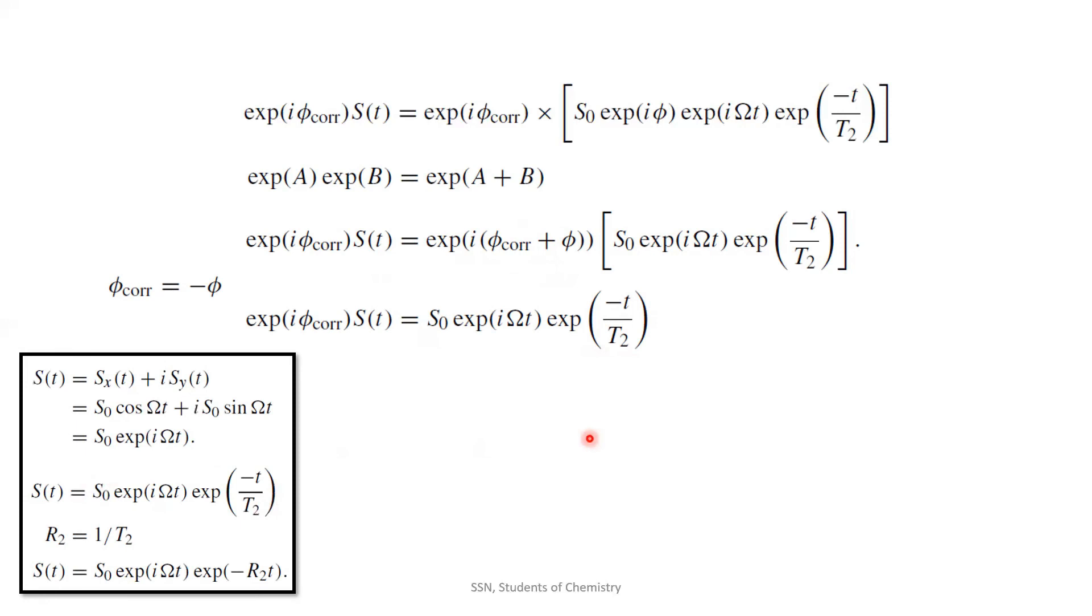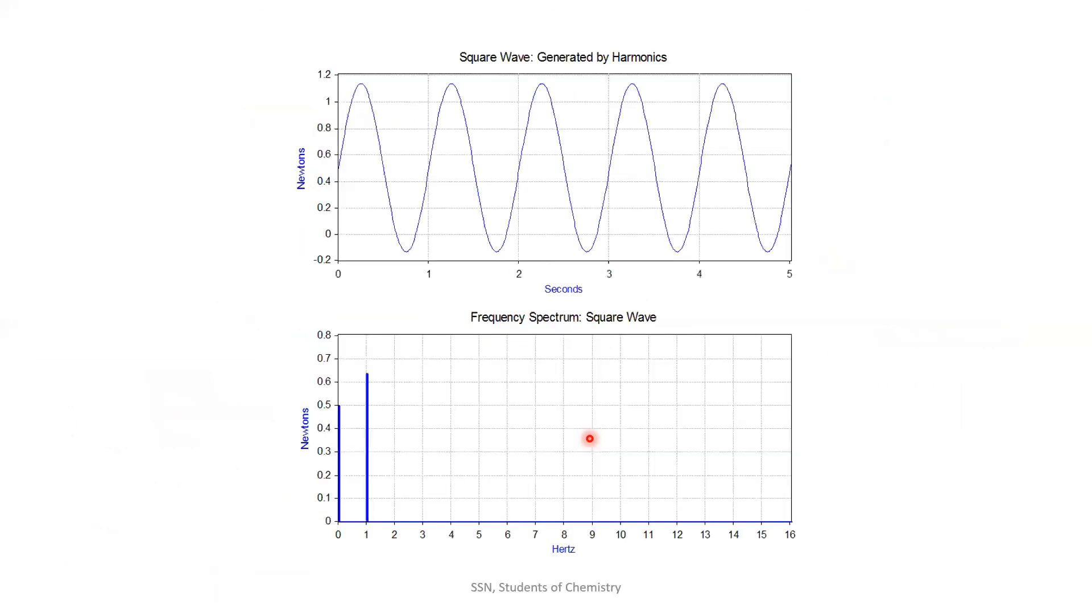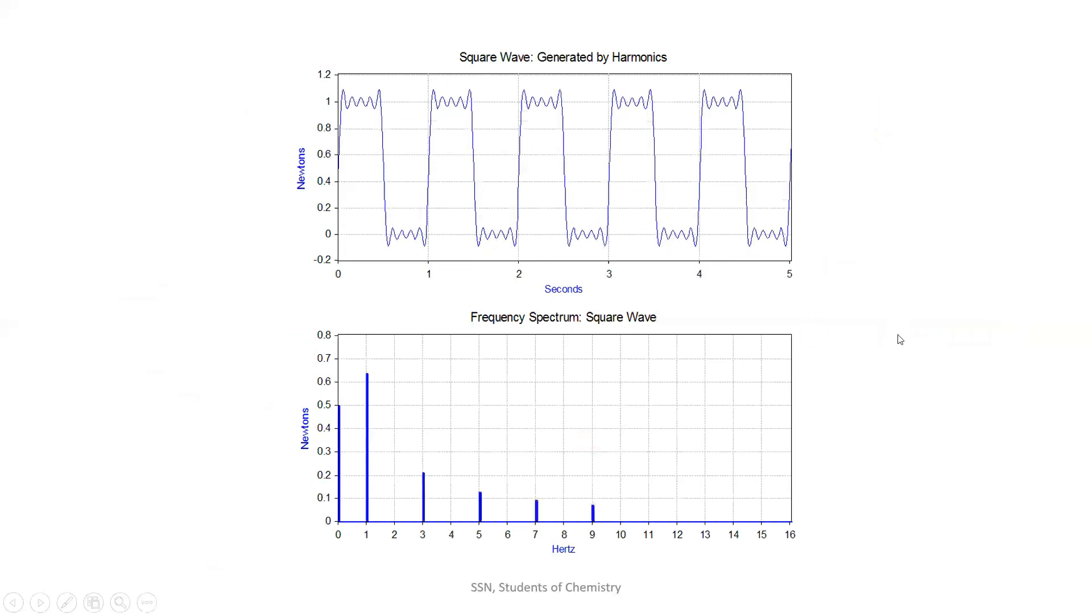Such phase correction can also be done to the frequency domain and this phase correction we call it as frequency independent phase correction or zero order phase correction. This is what conversion of signals from time domain to frequency domain looks like.